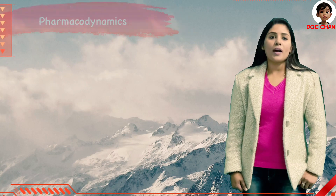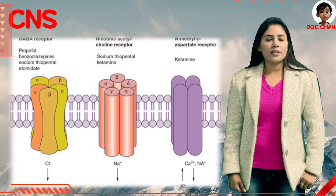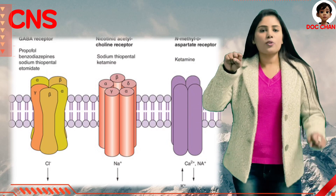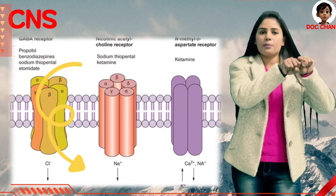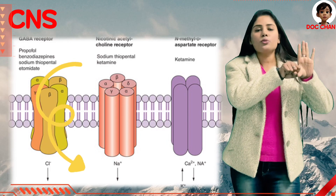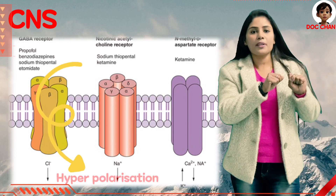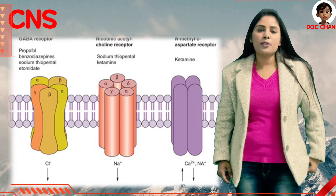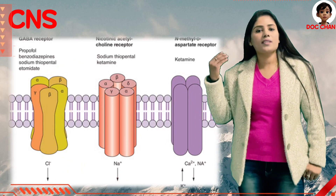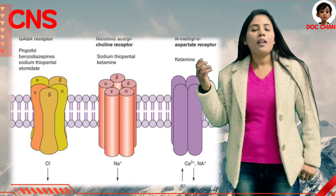Like any other barbiturates, thiopental is known to act on specific receptors of the CNS, especially the GABA-A receptor. As thiopental tends to bind with the GABA-A receptors, they tend to open the chloride channels, leading to hyperpolarization of the postsynaptic membrane, which in turn causes inhibition of the CNS and that leads to increase in sleep, that is hypnosis and anesthesia.